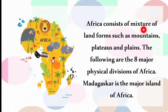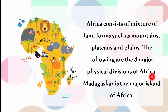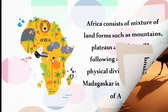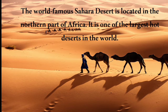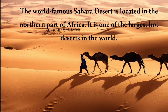Africa consists of a mixture of landforms including mountains, plateaus and plains, with 8 major physical divisions. Madagascar is the major island of Africa. The world-famous Sahara Desert is located in the northern part of Africa and is one of the largest hot deserts in the world.